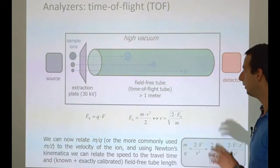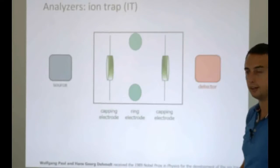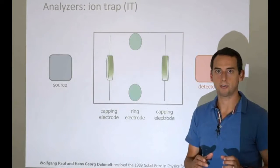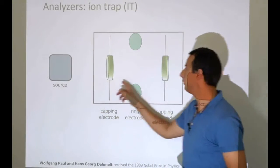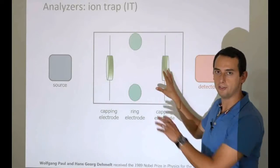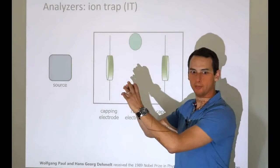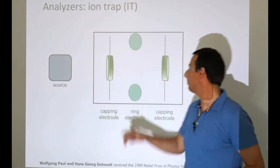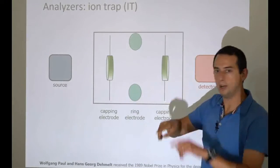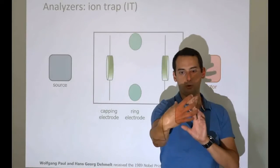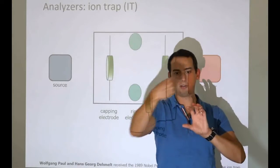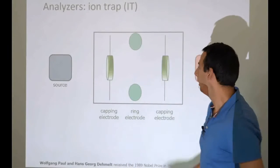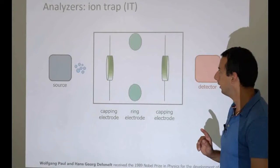Without further ado, let's go on with the next analyzer — one of my favorites: the ion trap. An ion trap analyzer does exactly that; it is a trap for ions. We have the source over here, and then there is a box: a three-dimensional structure with a round opening on one side and a round opening on the other side, essentially a tunnel through the box. In the middle of the box we have a ring — a central ring electrode. These two openings (capping electrodes) and the central ring electrode all have a current on them, and the currents are a little bit special.